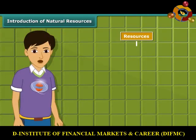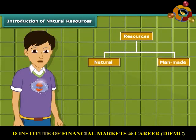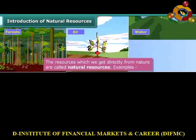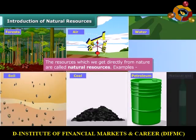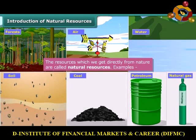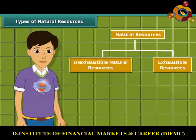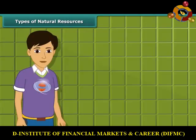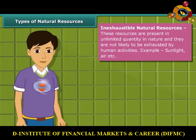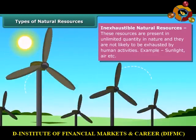Resources are of two types: natural and man-made. Natural resources such as forests, air, water, soil, coal, petroleum and natural gas are directly obtained from nature. Natural resources can be broadly classified into two categories. Inexhaustible natural resources are present in abundance, hence it is unlikely that they will be exhausted by any human activity.